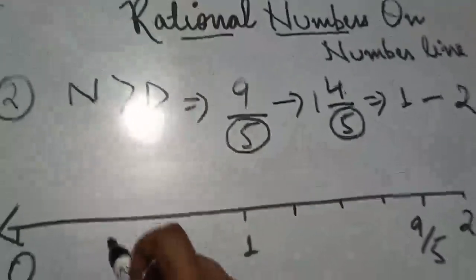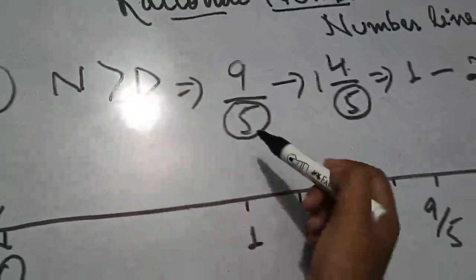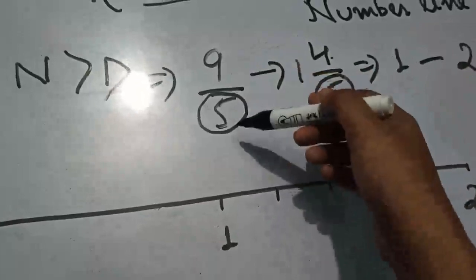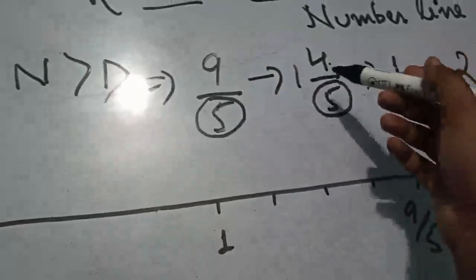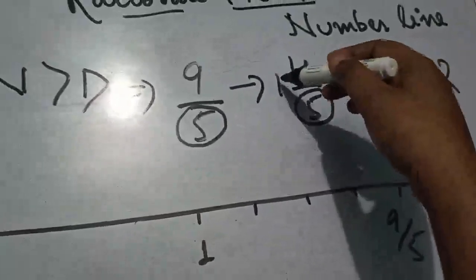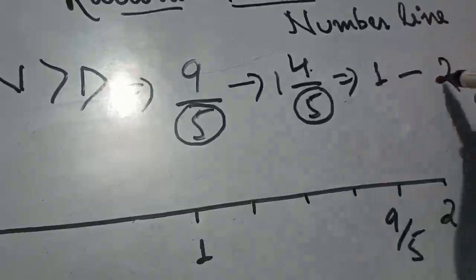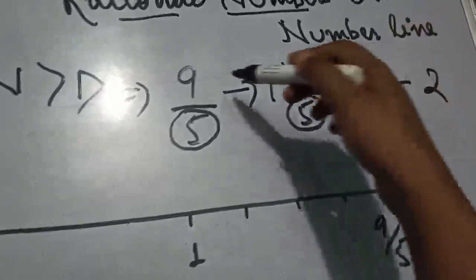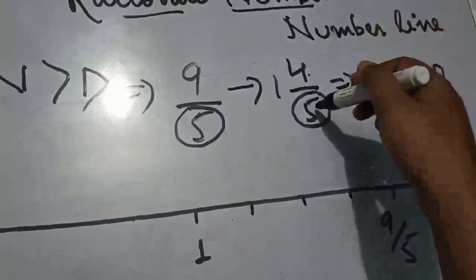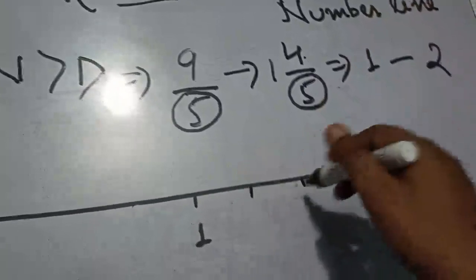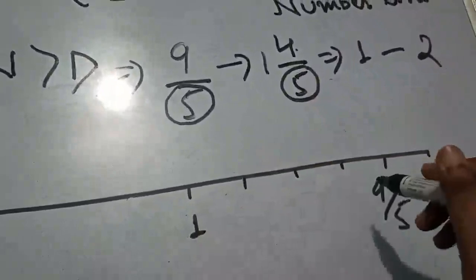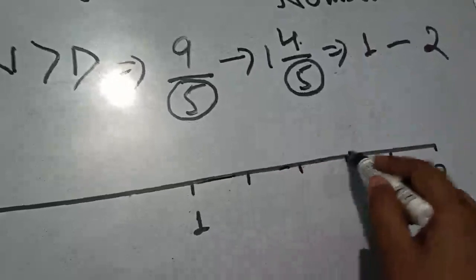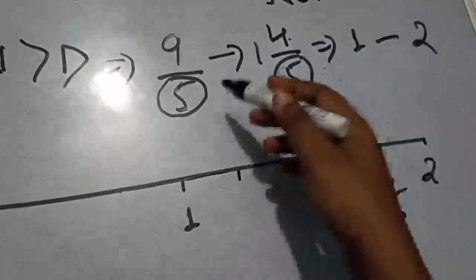Ek baar phir se dekhte hain: jab bhi numerator bada hoga denominator se, sabse pehle mixed number mein convert karo. Jaise 9 by 5 ko convert kiya to 1 whole 4 by 5 mila. Whole wale part ka number — 1 aur uske aage 2 — unke beech mein lie karega. Phir denominator ke parts mein divide karo aur numerator ke steps aage badho: 1, 2, 3, 4. Wahan 9 by 5 lie karega.